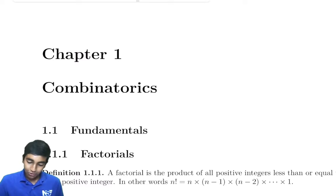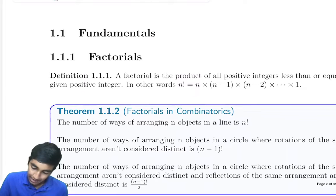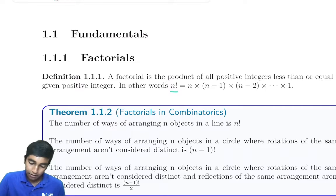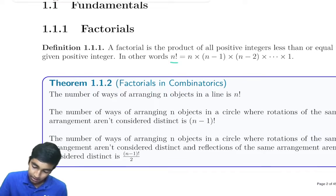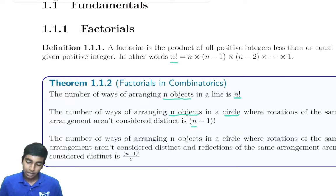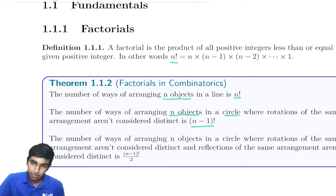First, we have factorials. n factorial is just n times n minus 1, all the way to 1. The number of ways to arrange n objects in a line is n factorial, and n objects in a circle is n minus 1 factorial. And if the problem says that reflections are not considered the same, then it's going to be n minus 1 factorial divided by 2.